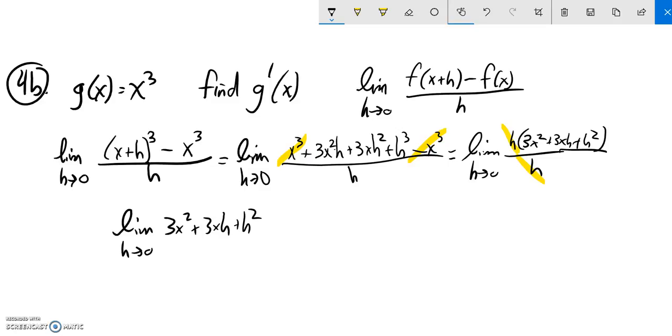And now I can do some direct substitution. As I let h go to 0, this term is 0 and this term is 0. So it just equals 3x squared. So my derivative at x is 3x squared.